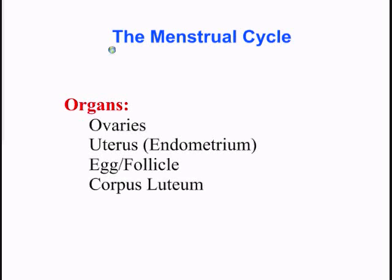Finally, we have a new organ — the corpus luteum. The corpus luteum is a special organ which is produced after ovulation. So when the follicle ovulates and the egg is released into the fallopian tubes, what remains is now called the corpus luteum. We don't see this until the latter part of the menstrual cycle.